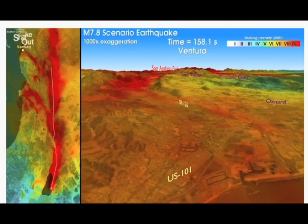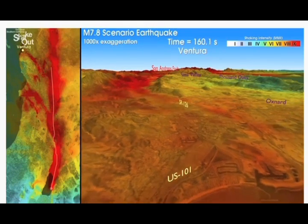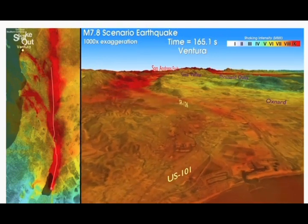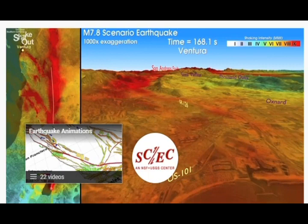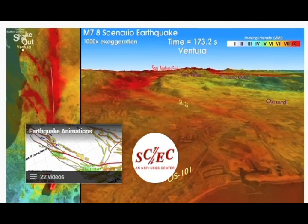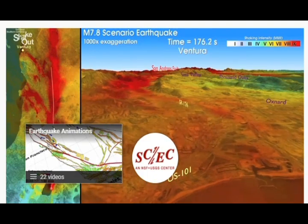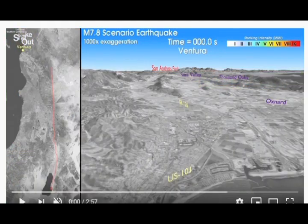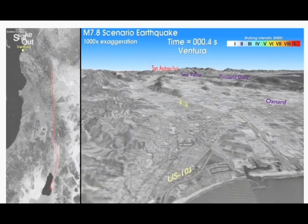The Great Southern California ShakeOut earthquake drill is based on a magnitude 7.8 scenario earthquake on the San Andreas Fault in Southern California. This portion of the San Andreas Fault has been identified as the most likely source of a very large earthquake in California. This simulation was made before the Ridgecrest earthquake of July 4th and 5th, 2019 — about a year before, as this ShakeOut scenario was posted on September 11, 2018.